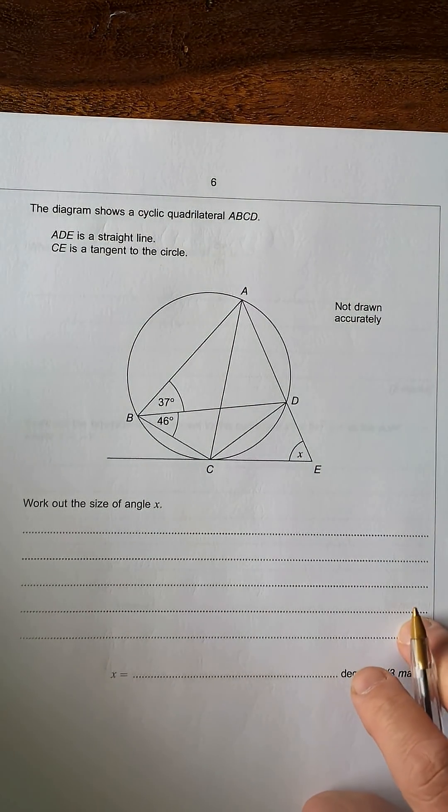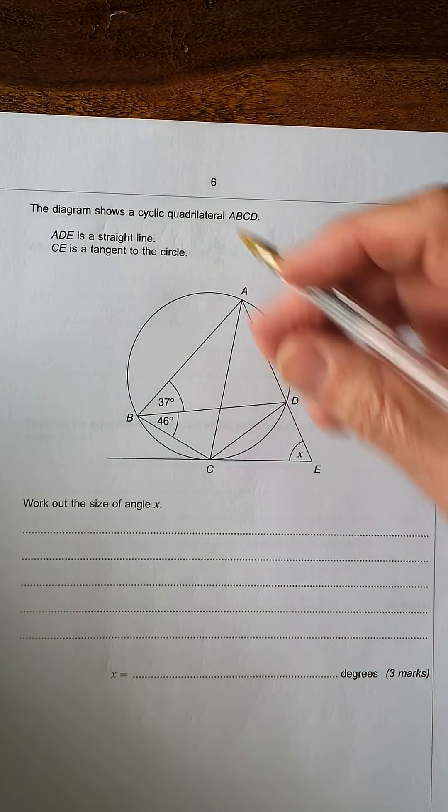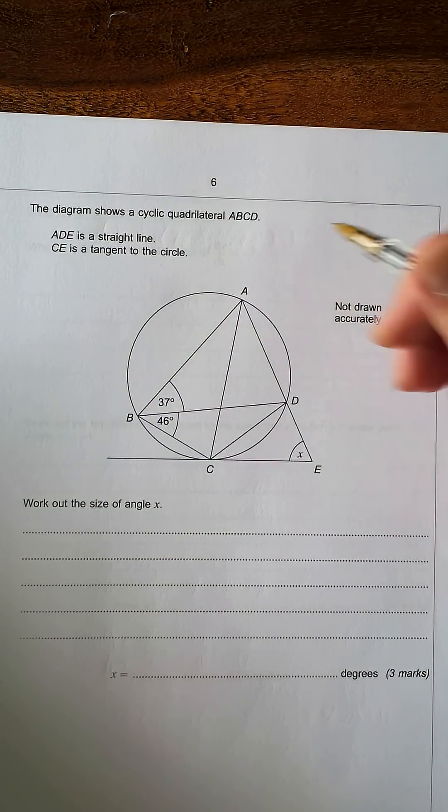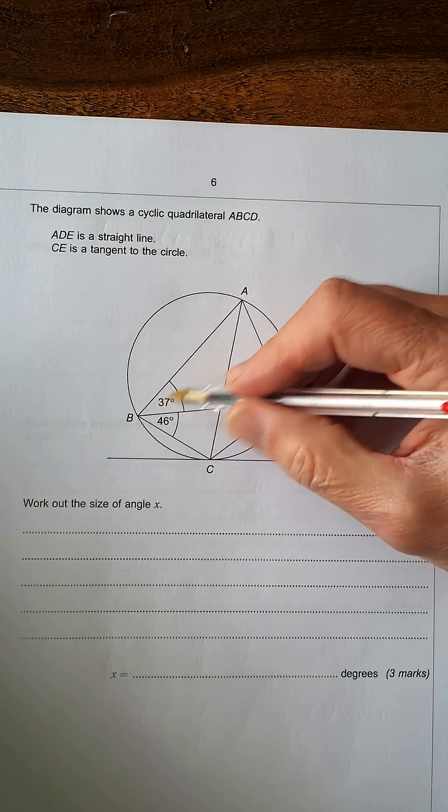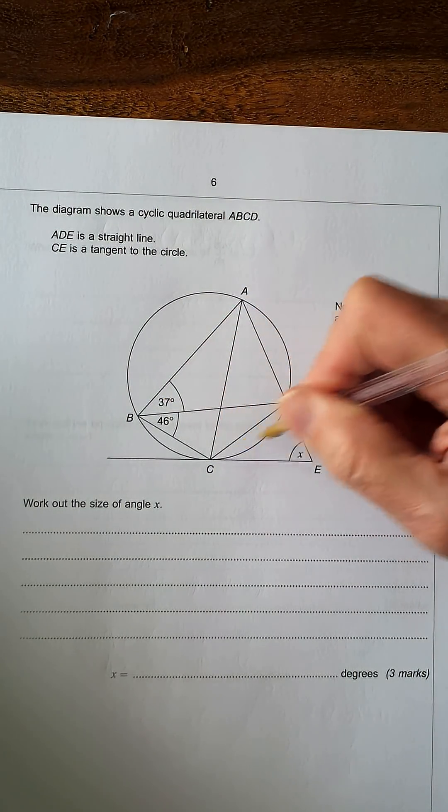This question 7 is about circle theorems. We can do this a few different ways, but I think possibly the easiest way is looking at this angle first.